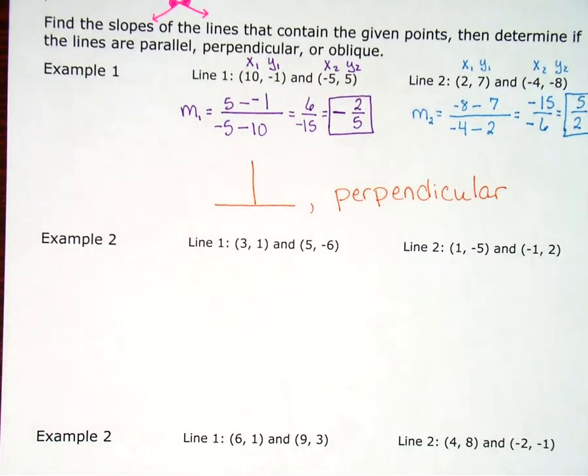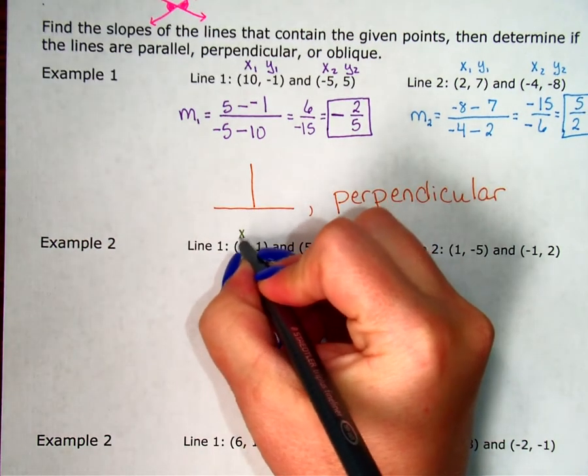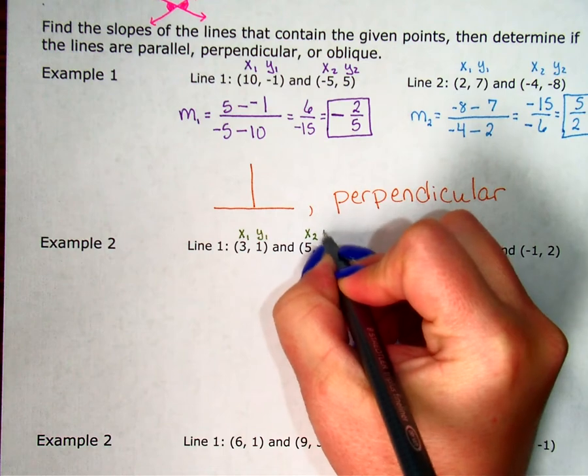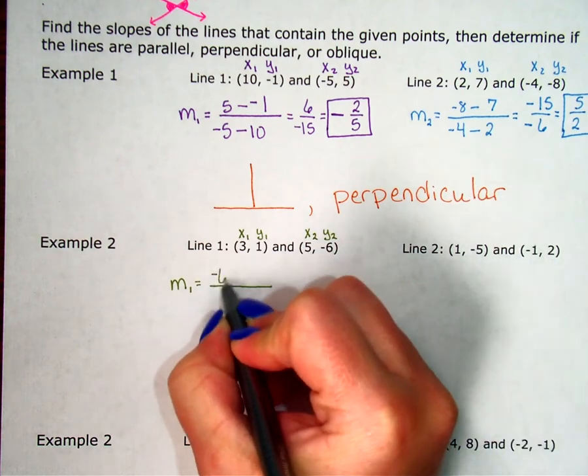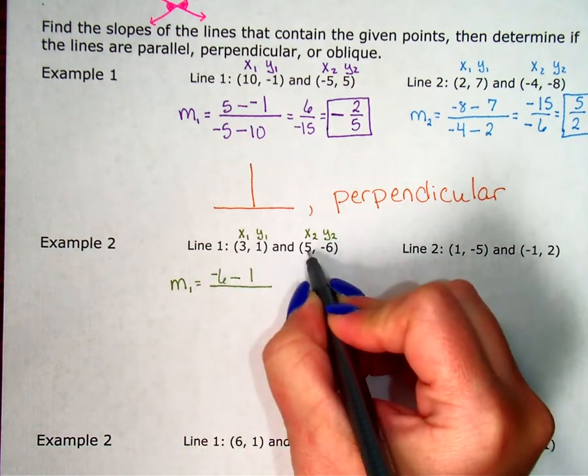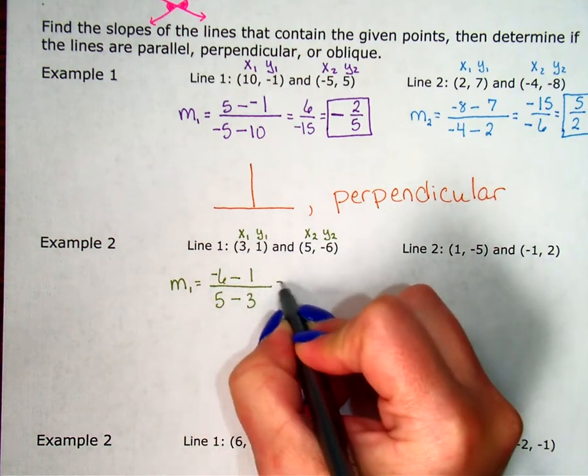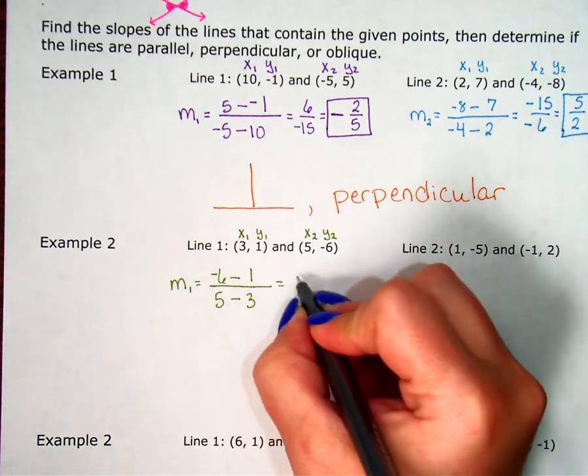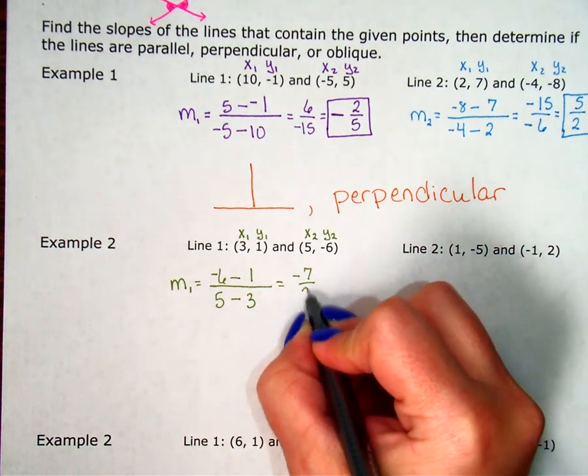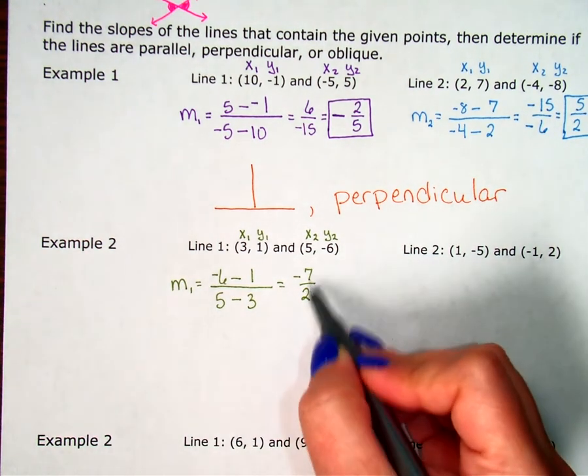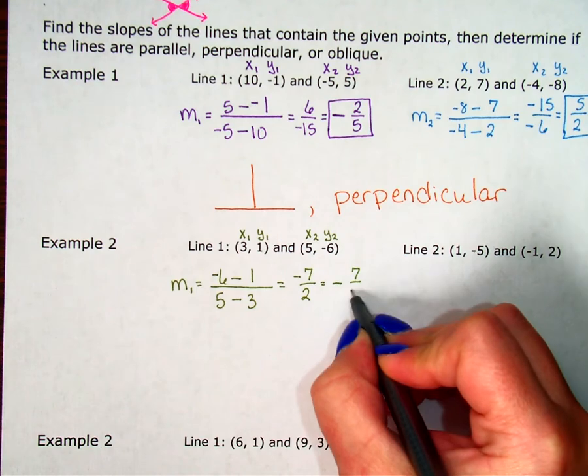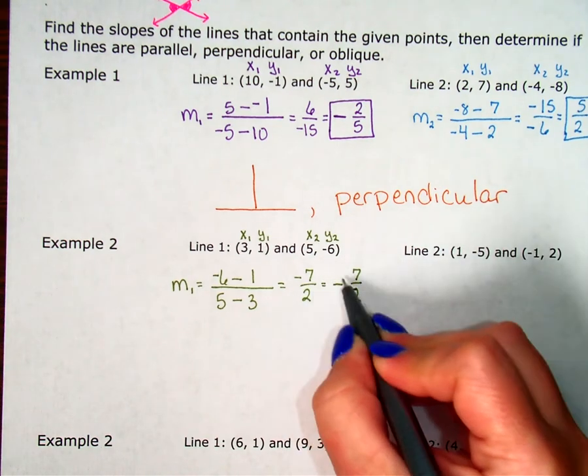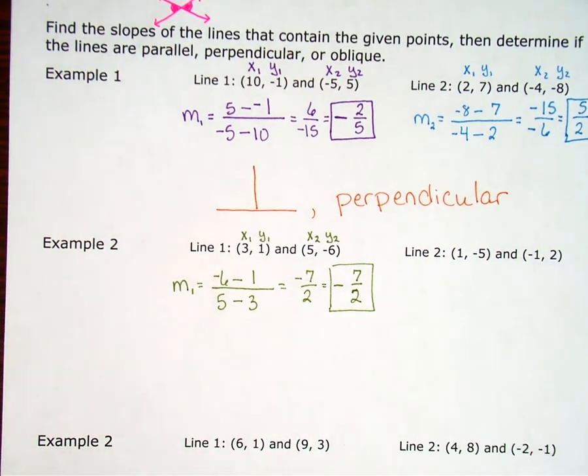Let's look at example 2. For example 2, I'm going to do the exact same process. I'm going to label my first set of points, x1, y1, x2, y2. Slope of line 1. Start with the second y, negative 6 minus 1. Then my x is 5 minus 3. Negative 6 minus 1 is a negative 7. 5 minus 3 is 2. So negative 7 over 2. I don't have to rewrite that because that doesn't reduce. And my negative's in the top, which is okay. So there's my first slope, negative 7 over 2.